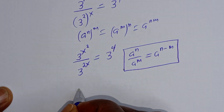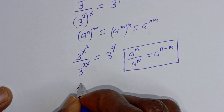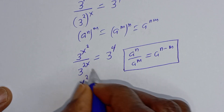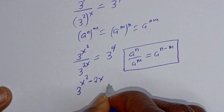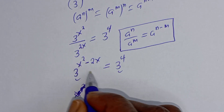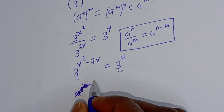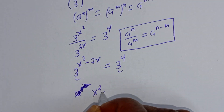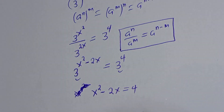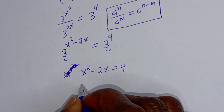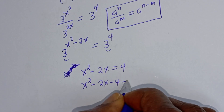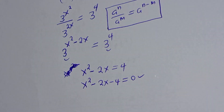Then this can be written as 3 raised to power x squared minus 2x is equal to 3 raised to power 4. They have the same base, so we equate the exponents: x squared minus 2x is equal to 4. This gives x squared minus 2x minus 4 is equal to 0. This is a quadratic equation.